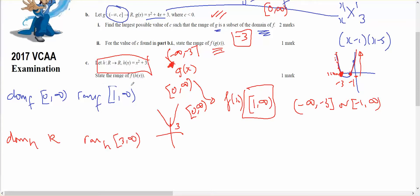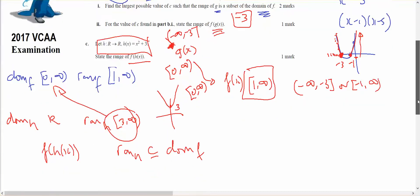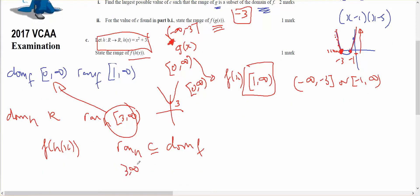For f of h of x to exist, the range of h has to be a subset of the domain of f, and that does fit inside there. That 3 to infinity does fit inside 0 to infinity, so that's a winner, it does exist.